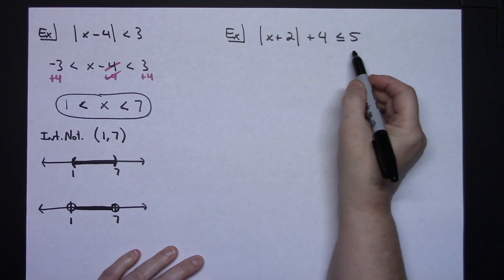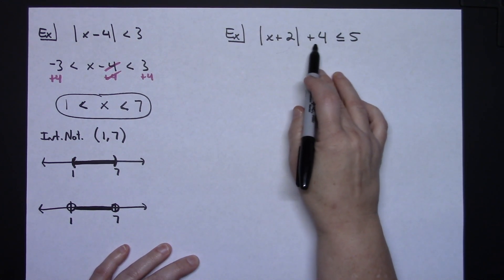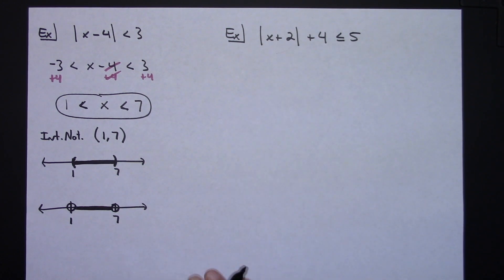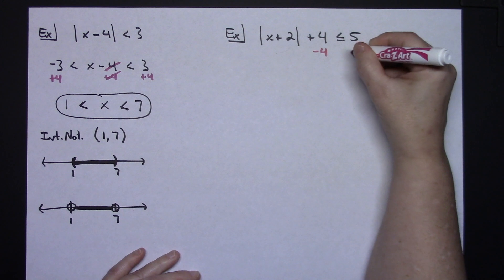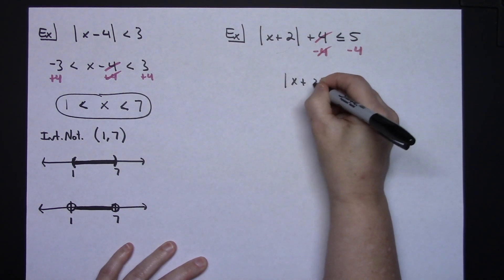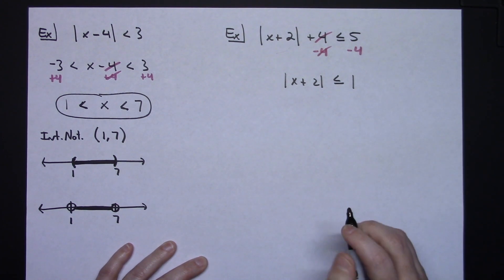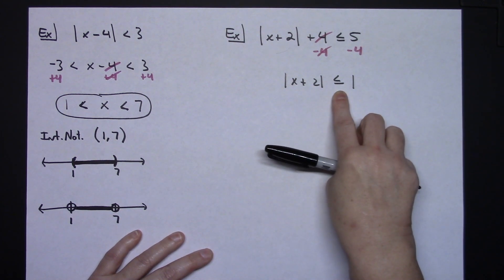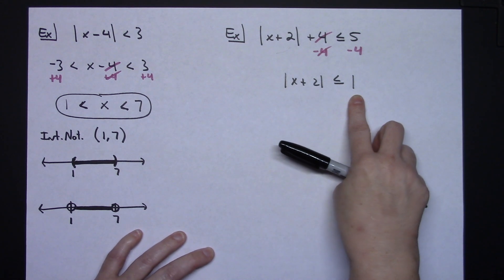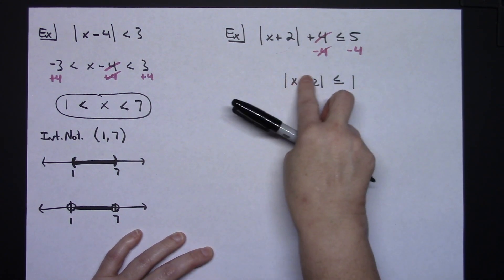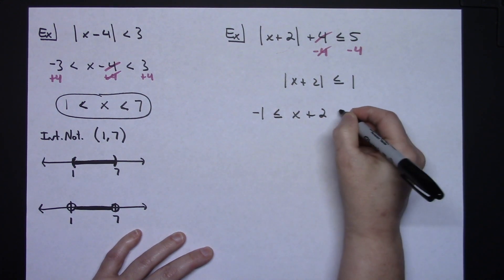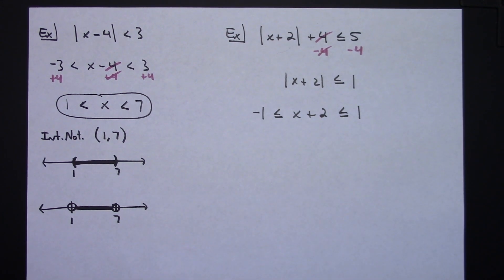For the next example, the absolute value bars are not isolated — there's a plus 4 on the left side. I must isolate the absolute value bars first by subtracting 4 from both sides. That gives: absolute value of x plus 2 is less than or equal to 1. Now the bars are isolated and less than or equal to 1, so I know it's an AND.